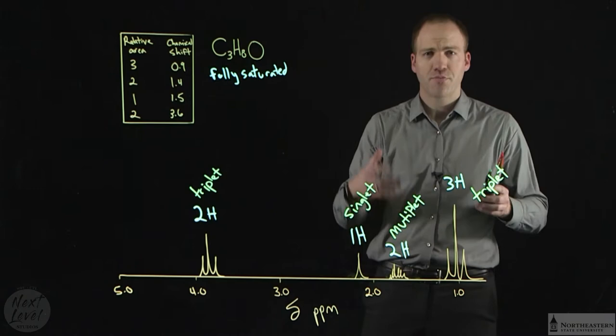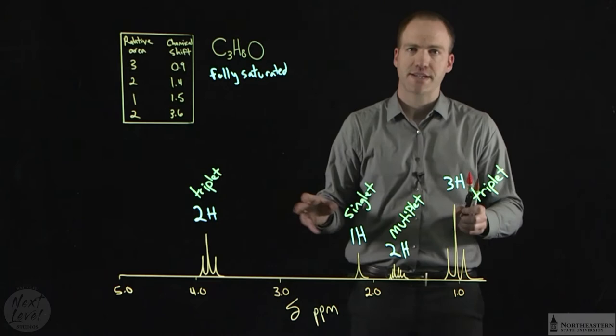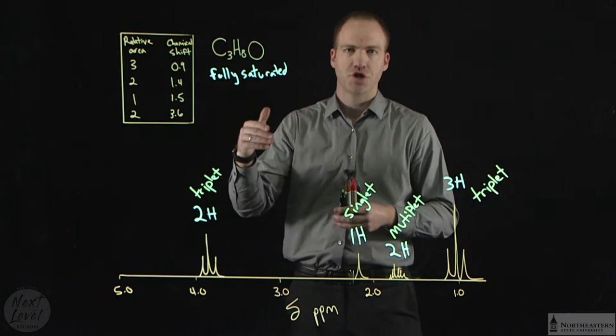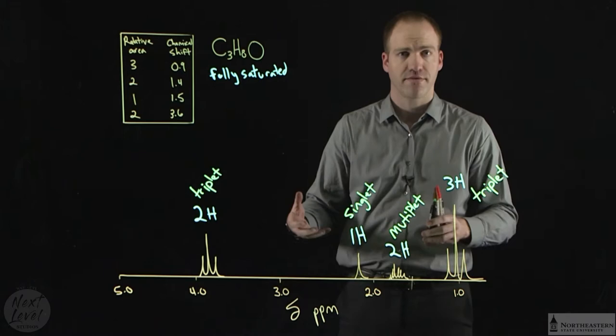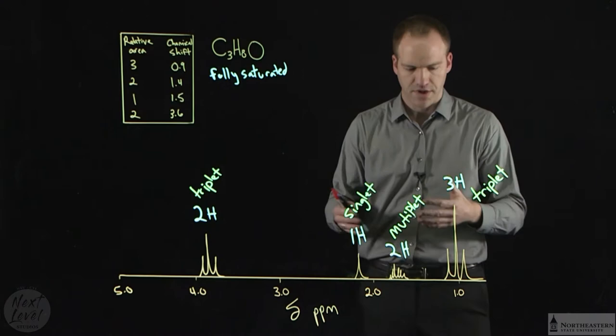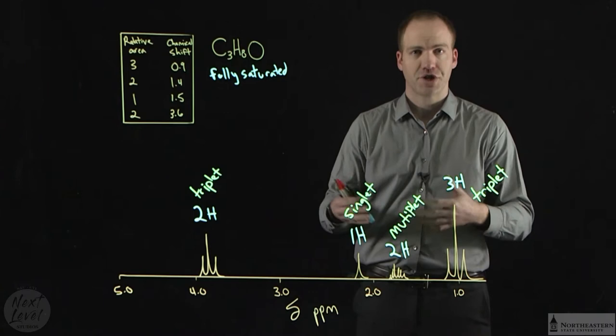Now we're going to put these three pieces of information—our chemical shift, our integration, and our splitting patterns—together to build up pieces of this molecule. And we are trying to figure out what is the structure of C3H8O. There are many constitutional isomers of C3H8O, but this spectrum refers to just one of them. I like to start on the far right-hand side; it tends to be the easiest place in the spectrum to do this. I'm also taking note that when I start on the far right-hand side, I am in the most electron-rich area of the molecule. And in my mind, I'm thinking I'm farthest away from that oxygen.